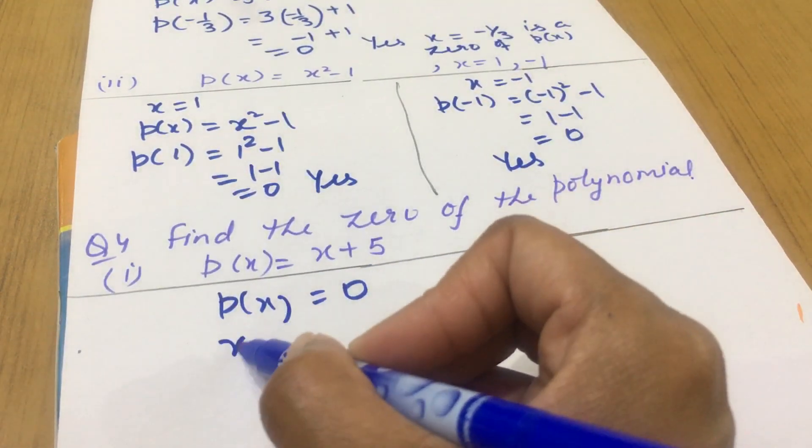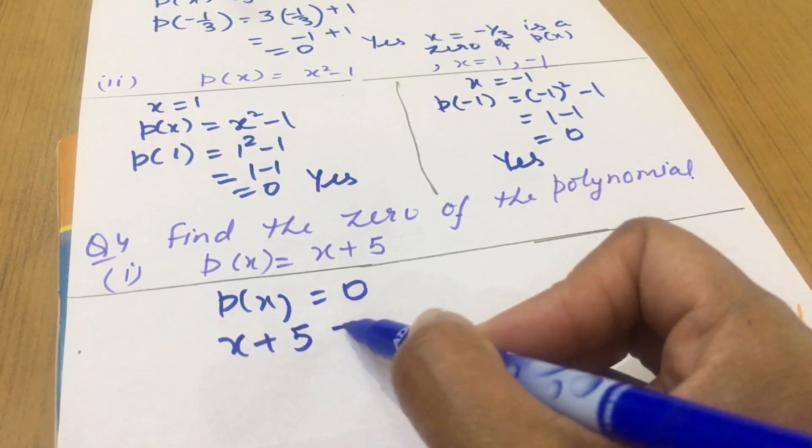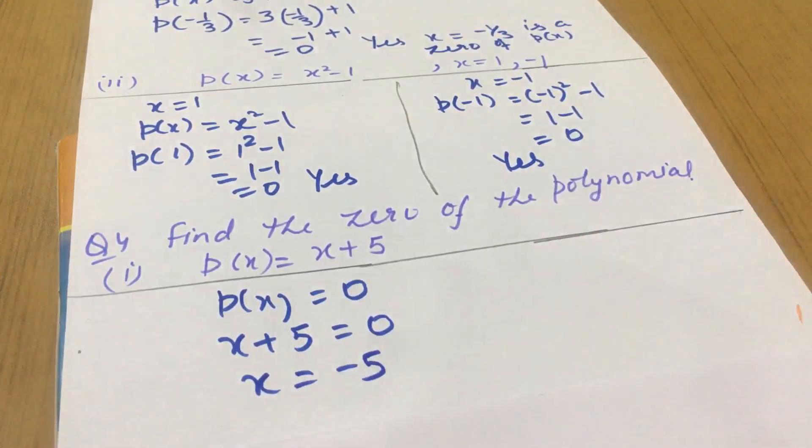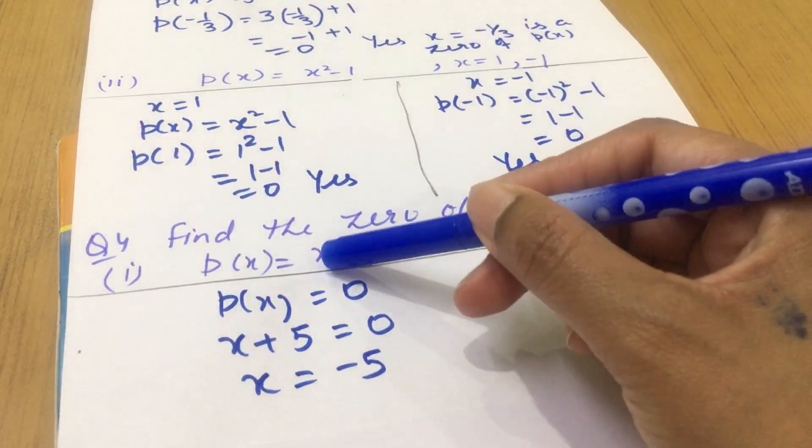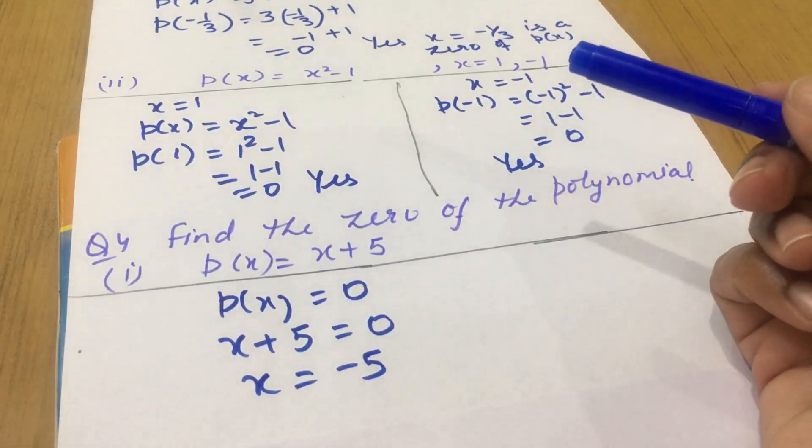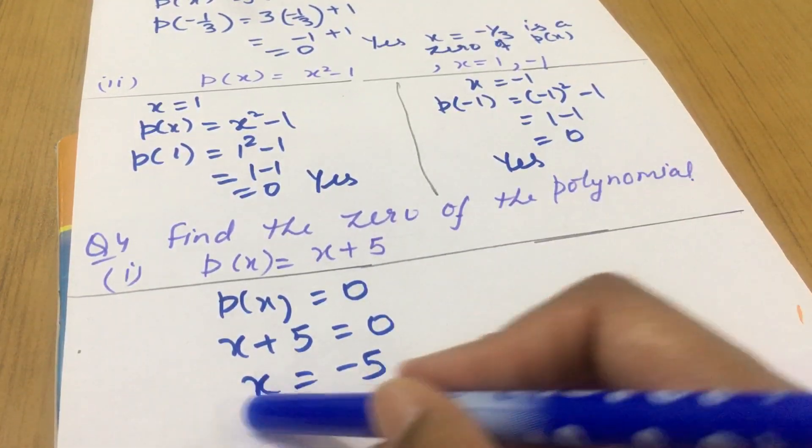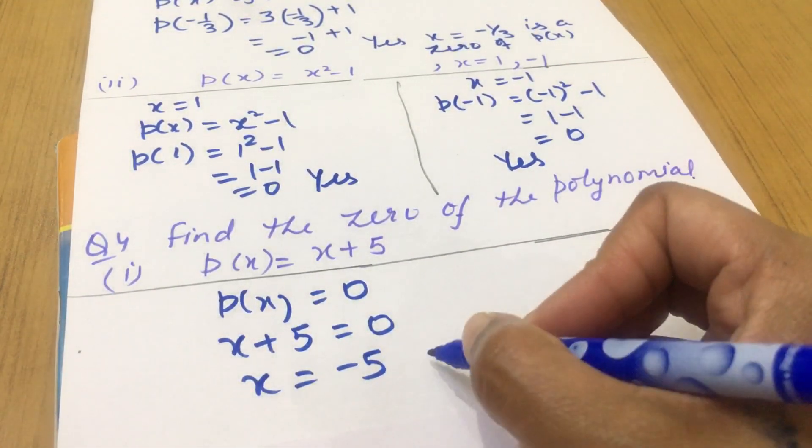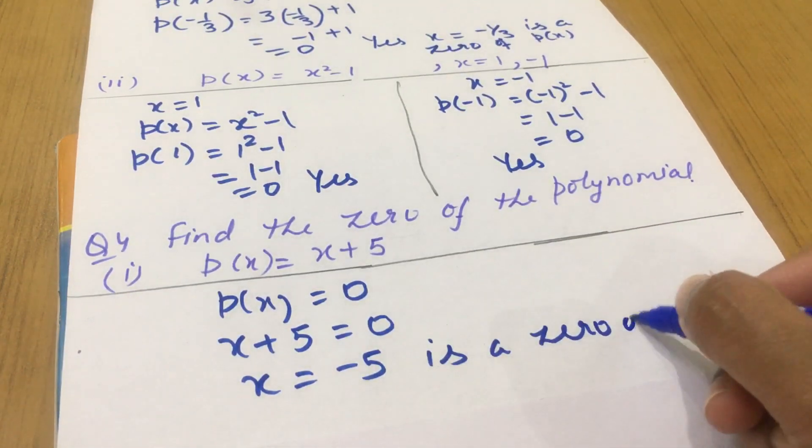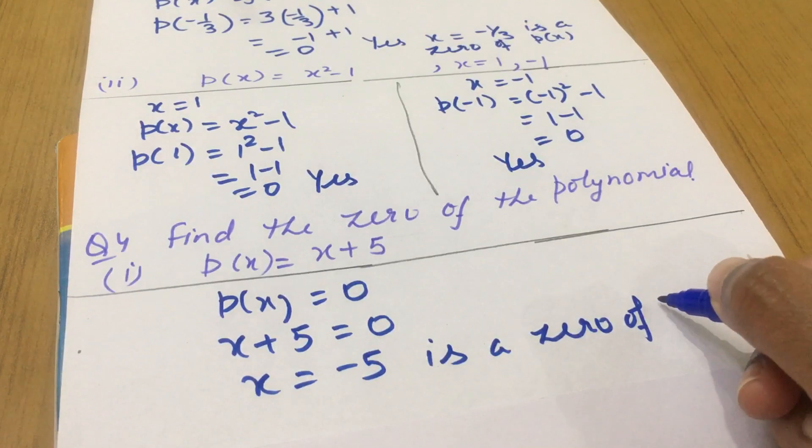And p(x) is x plus 5 and you will get x as minus 5. You can cross check it also. If I am substituting x as minus 5, then minus 5 plus 5 is 0. It means x equals to minus 5 is a zero of p(x).